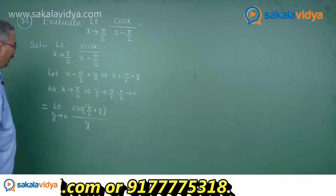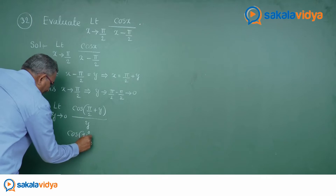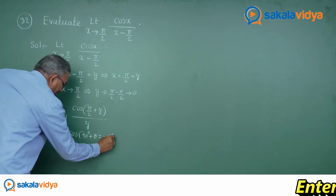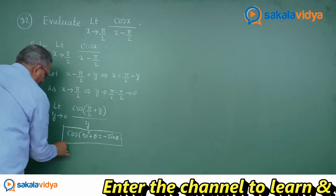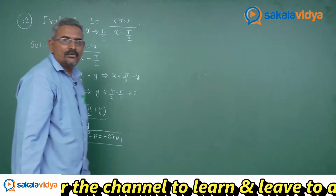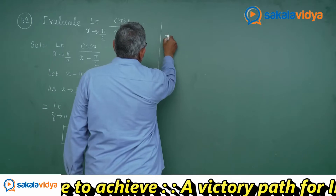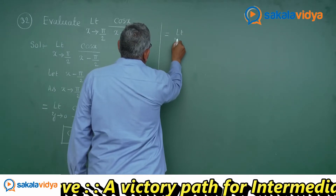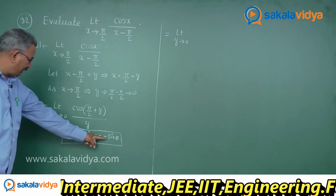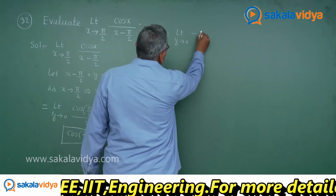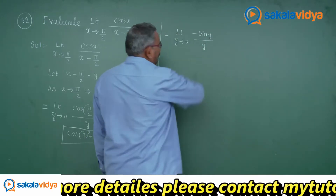Now we have the formula: cos(90 degrees + θ) equals minus sin θ — this is very, very important. So this can be written as: limit y approaches 0, cos(π/2 plus y) is replaced by minus sin y, giving us minus sin y divided by y. Let us take minus common.